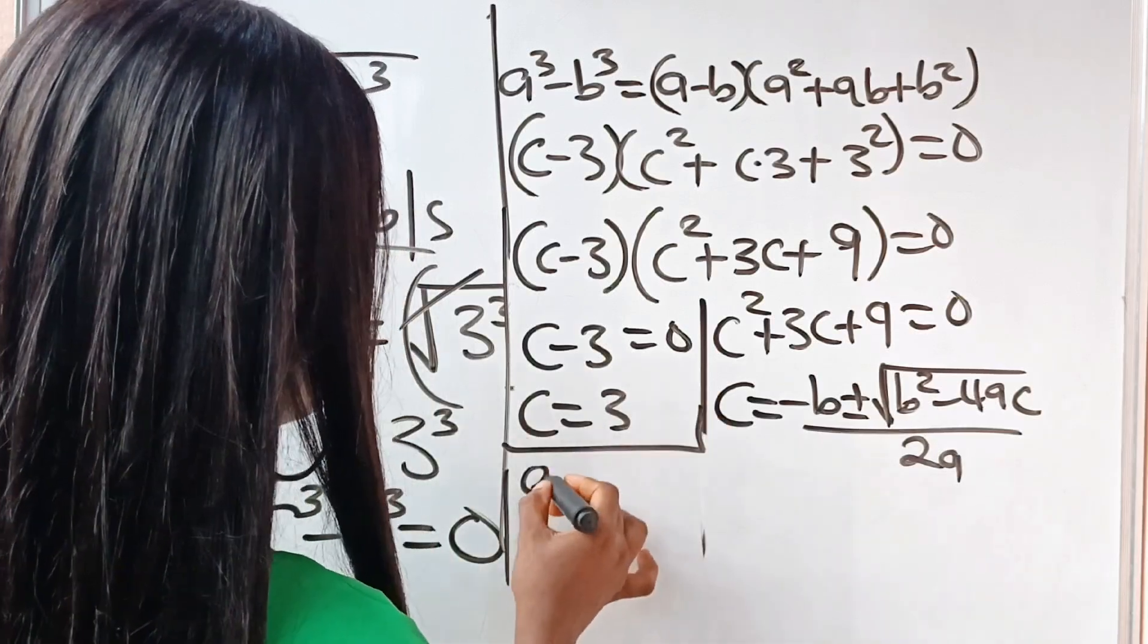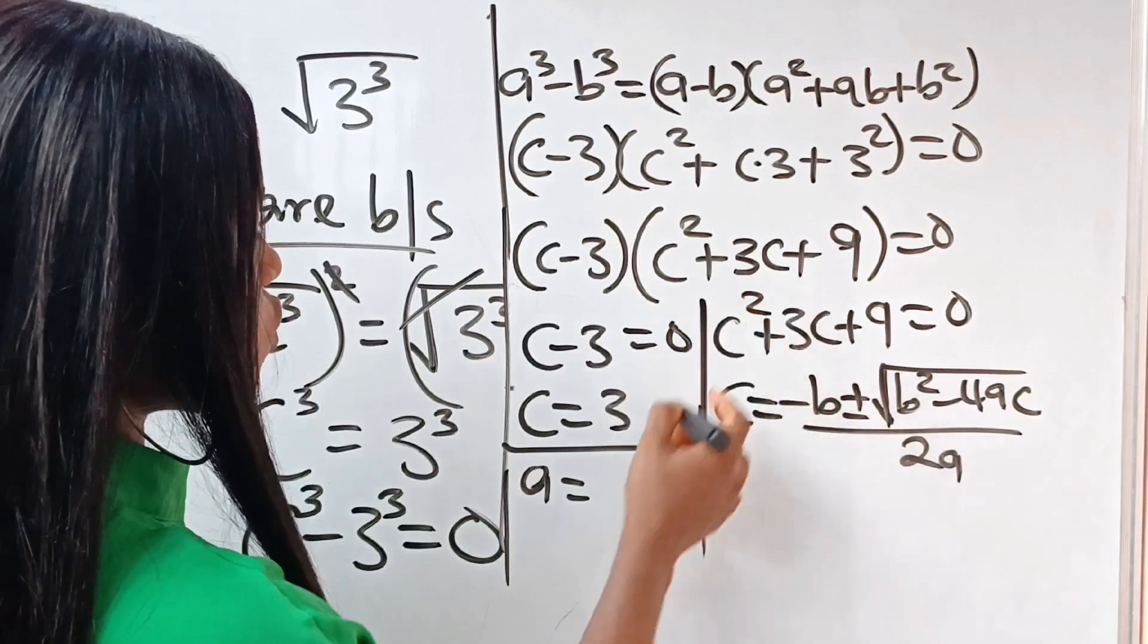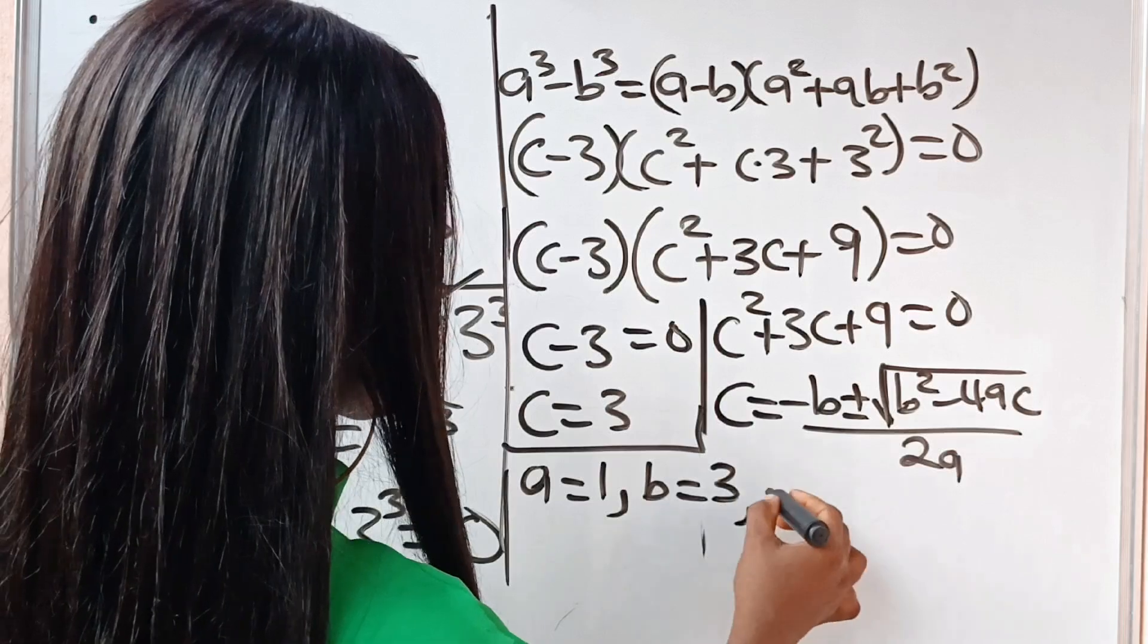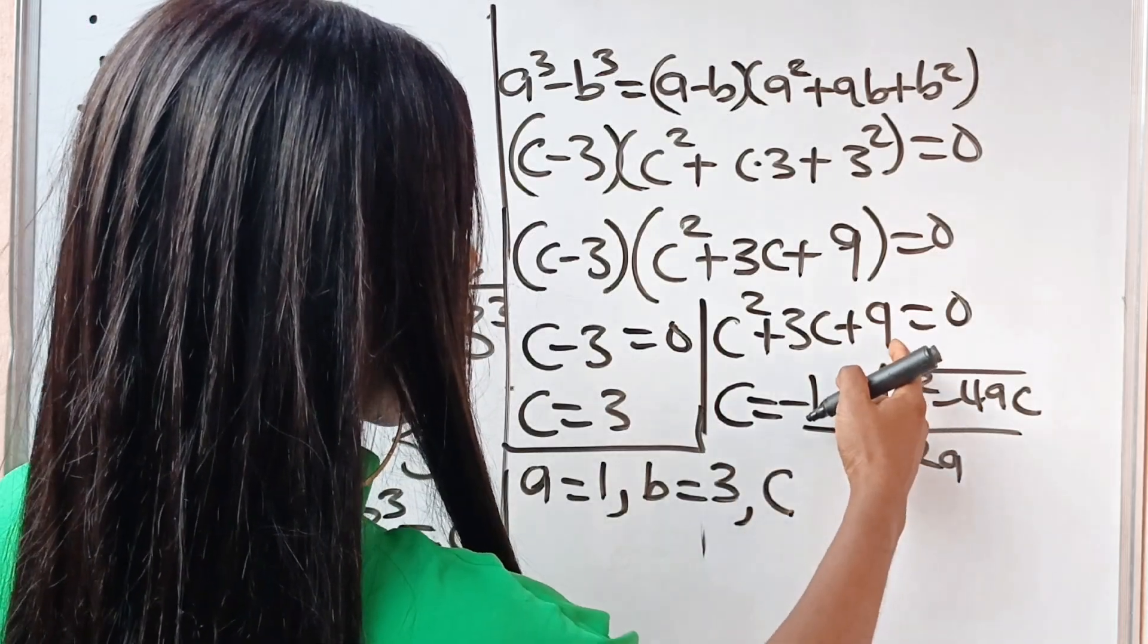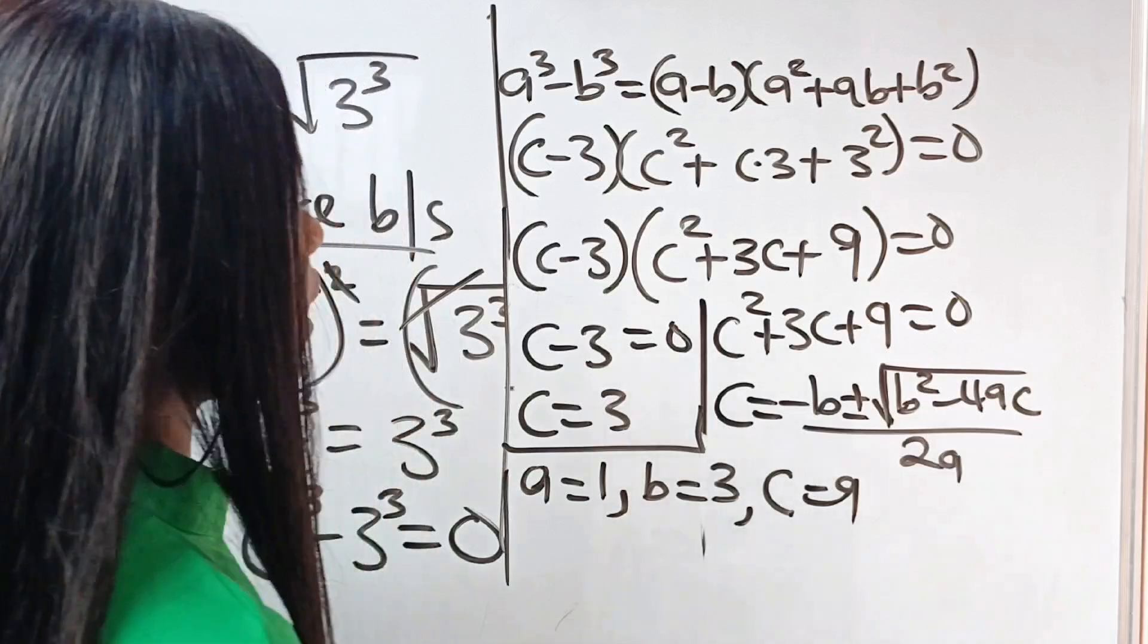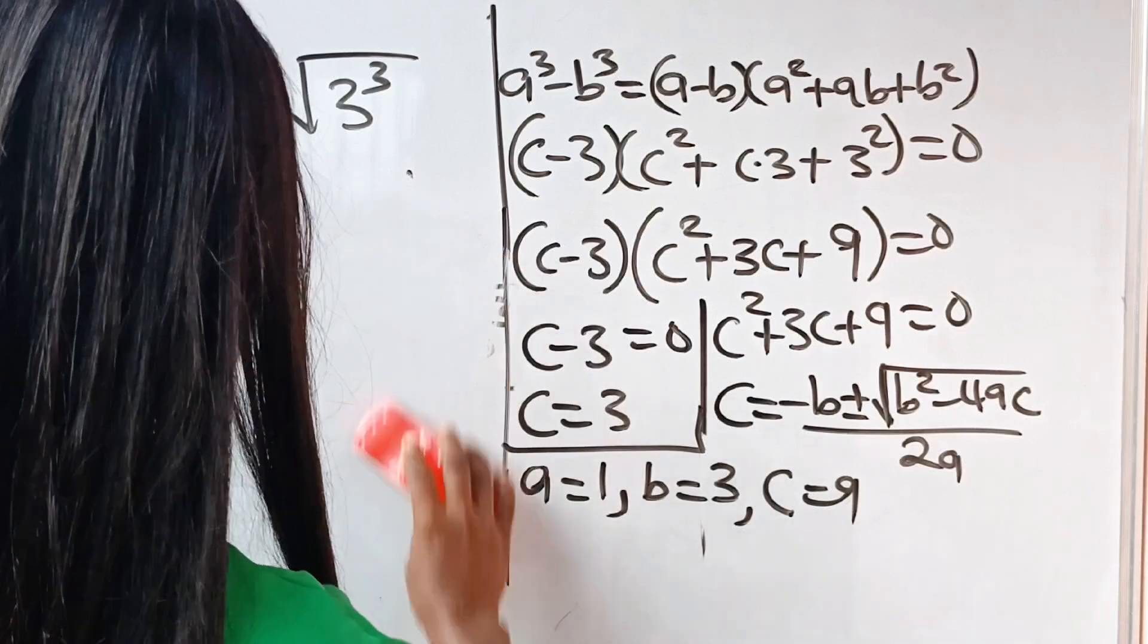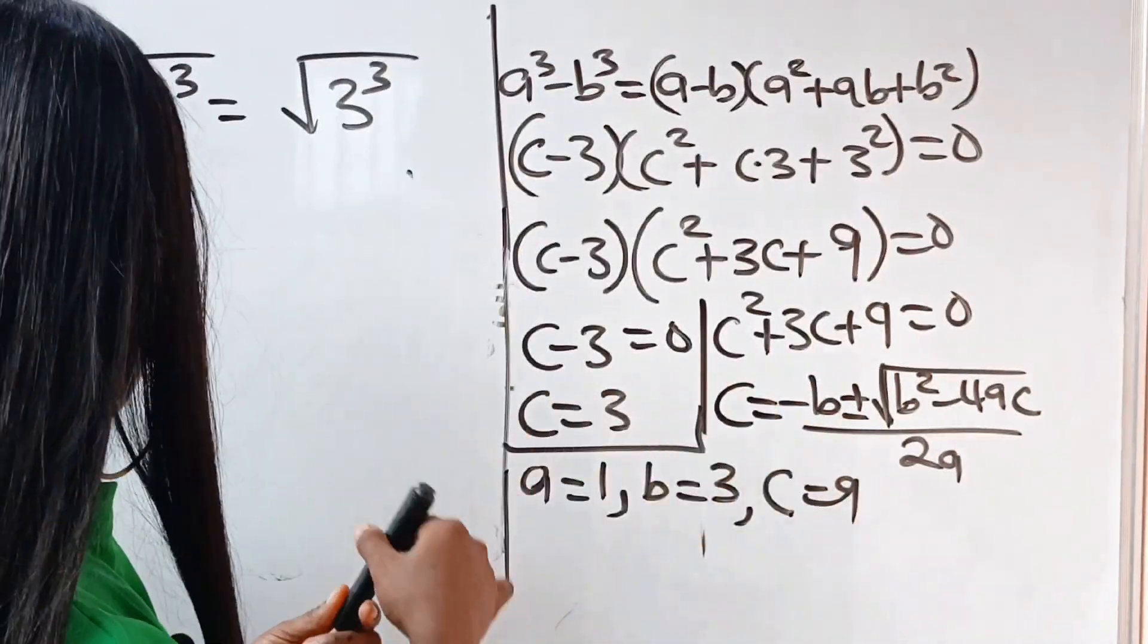Now, our a is equal to the coefficient of c squared, which is 1. Our b is the coefficient of c, which is 3. And our c is our constant, which is 9. So that simply means that we can get the value of c using this formula.